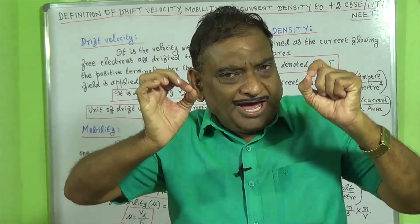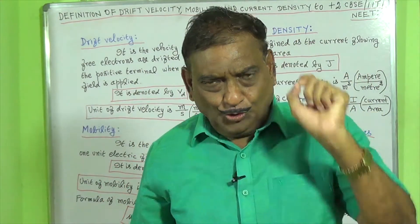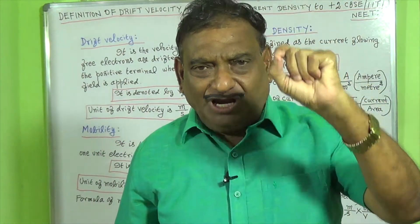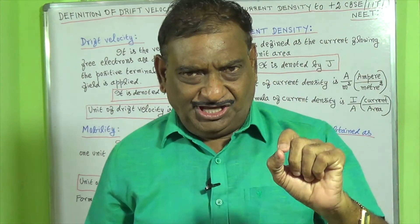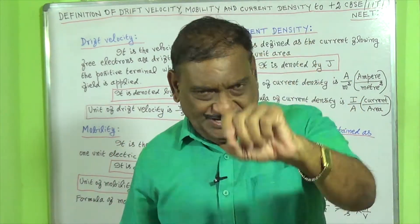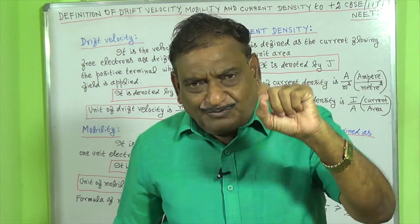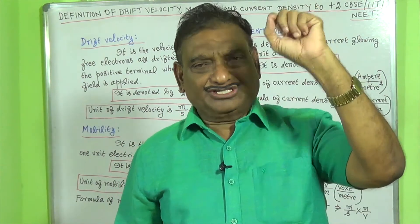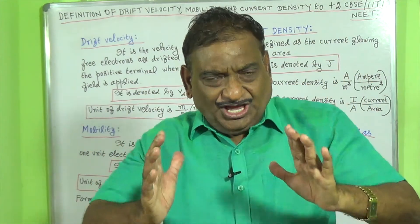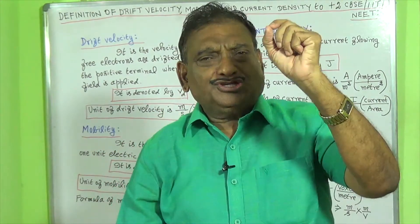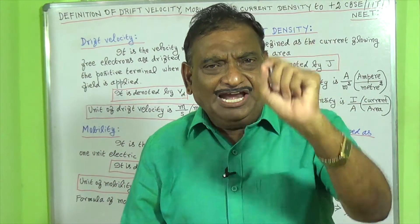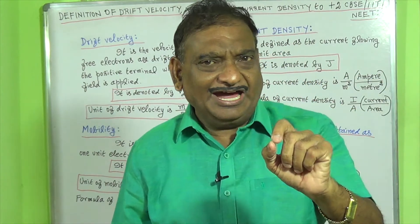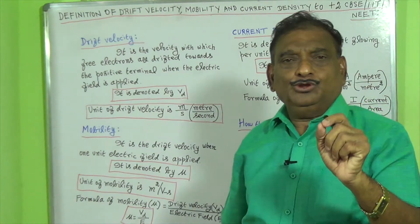In this video we are going to learn the definition of drift velocity, mobility, and current density. Drift velocity is defined as the velocity with which the electrons are drifted towards the positive terminal when the electric field is applied. It is denoted by the letter vd. The unit of drift velocity is meter per second.